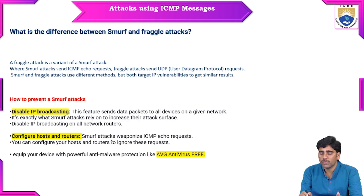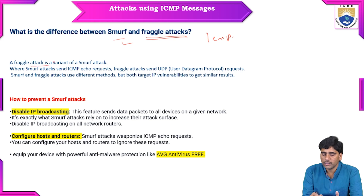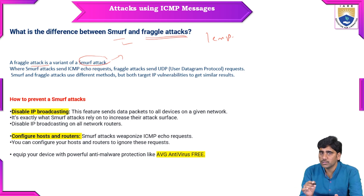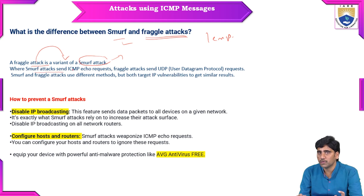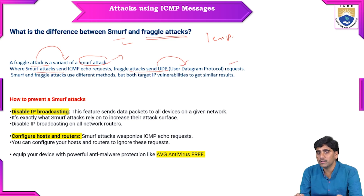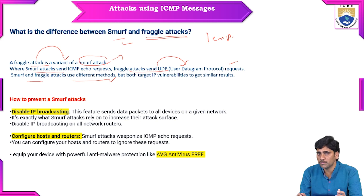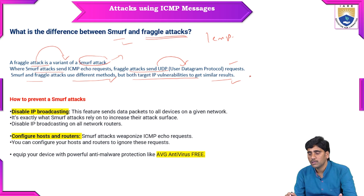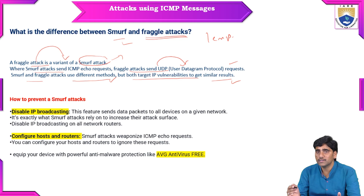A fraggle attack is a variant of the smurf attack. Both are DDoS attacks, but where a smurf attack sends ICMP echo requests, a fraggle attack sends UDP requests. Smurf and fraggle attacks use different methods and techniques, but both target IP vulnerabilities to achieve a similar result.